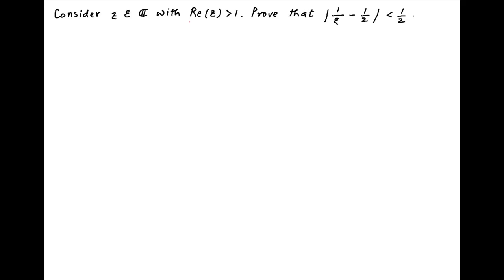The real part of z can be expressed as half of the sum of z and its conjugate. Therefore, the given inequality can be written as half of z plus its conjugate is greater than 1.